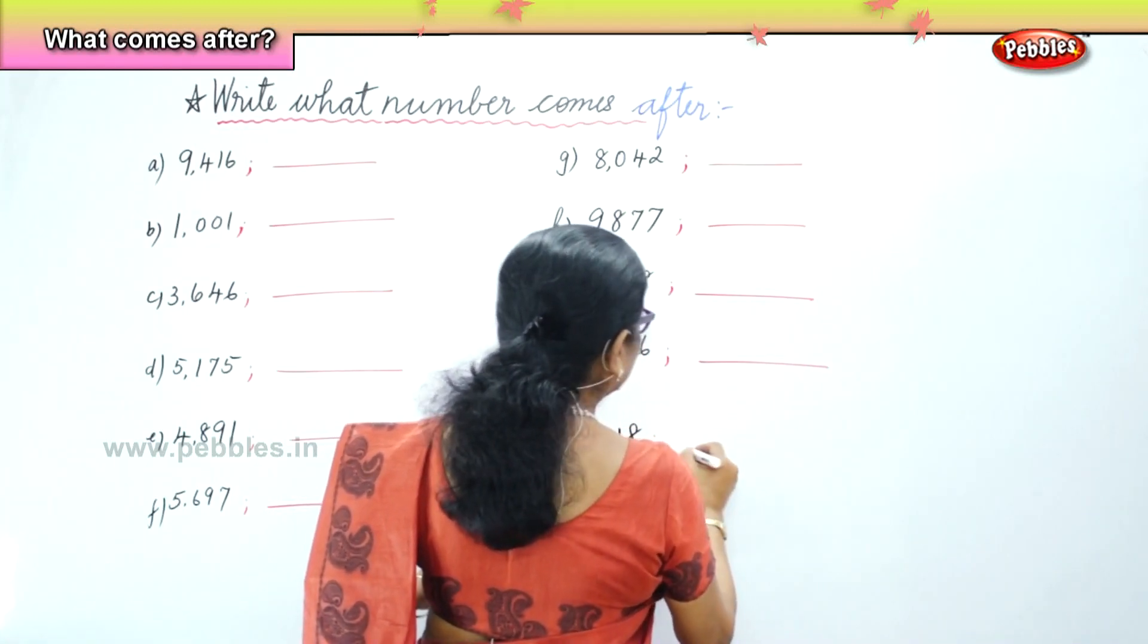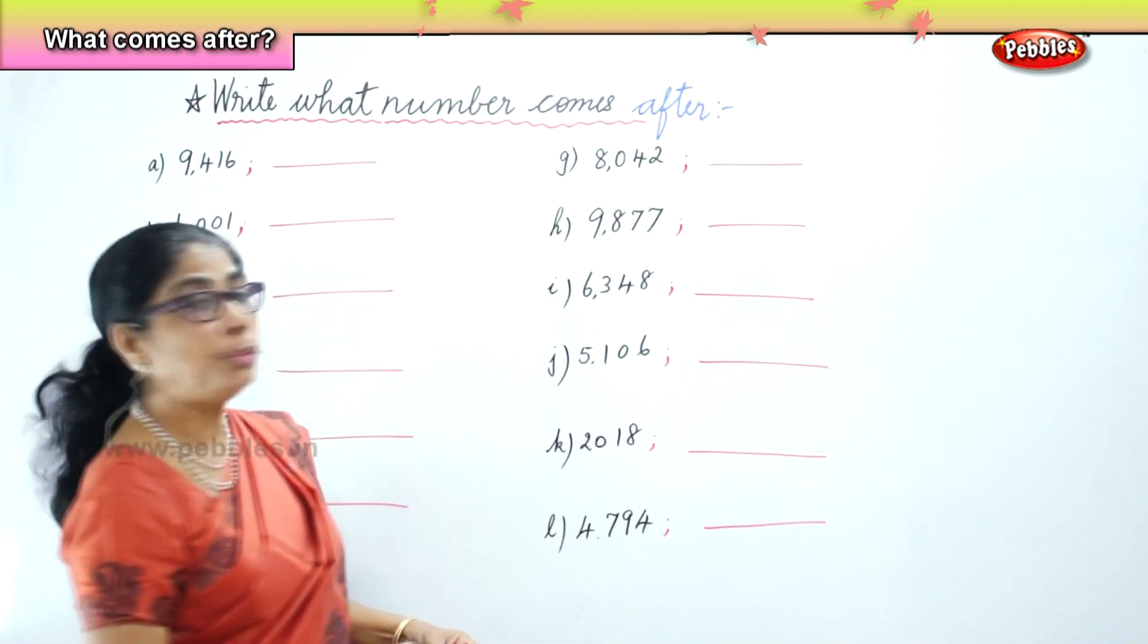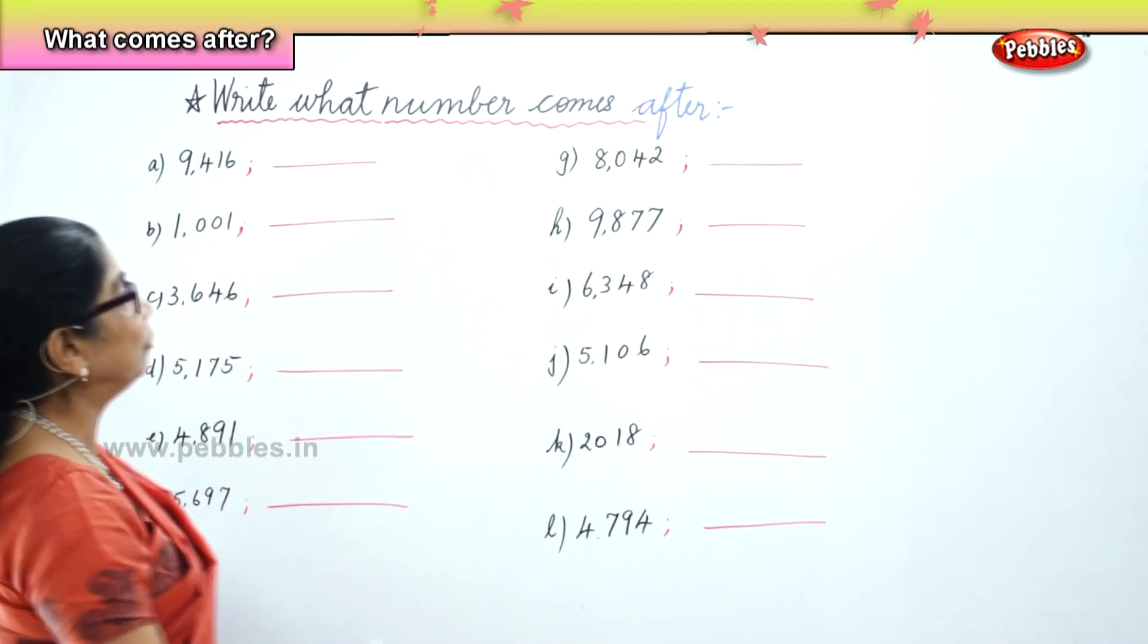Have to look at the ones, tens, hundreds, thousand, before you put down the number. Now, let's look at it very carefully.